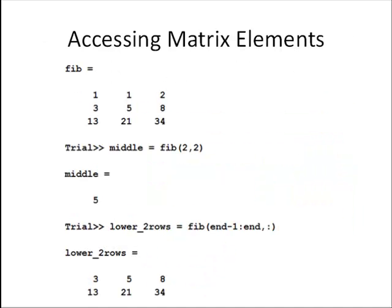Moving on to accessing matrix elements. Similar to vectors, but now we're dealing with rows and columns in our indices. For example, here's that matrix Fib again. If we want the middle element of Fib, that would be the 5 here in the second row and the second column. We assign that to what would be a scalar since it's a single element.